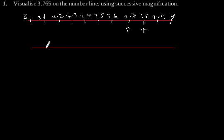Again divide this number line into 10 equal parts: 1st, 2nd, 3rd, 4th, 5th, 6th, 7th, 8th and 9th. So this point will be our 3.7 and this is our 3.8. So the number 3.765 lies between 3.7 and 3.8.